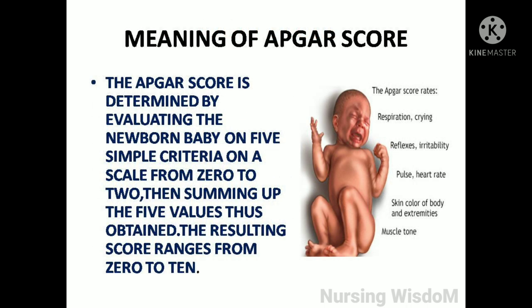The APGAR score is determined by evaluating the newborn baby on five simple criteria on a scale from 0 to 2, then summing up the five values obtained. The resulting score ranges from 0 to 10.